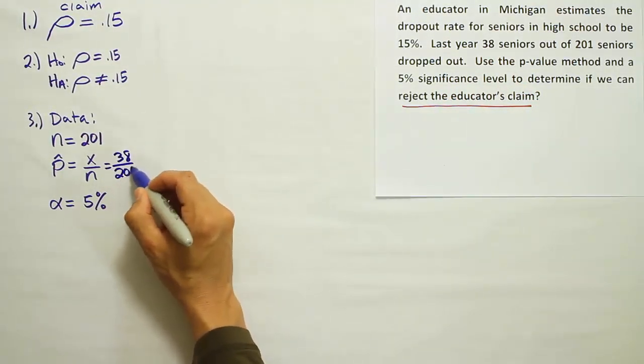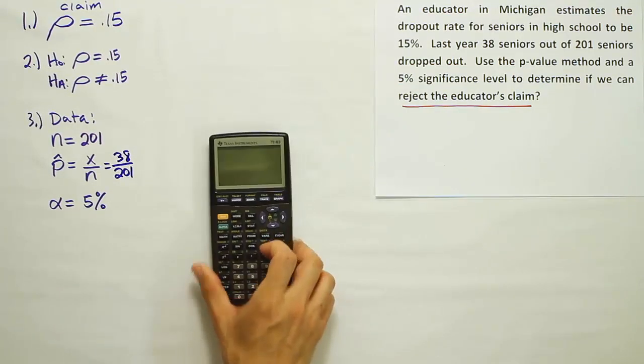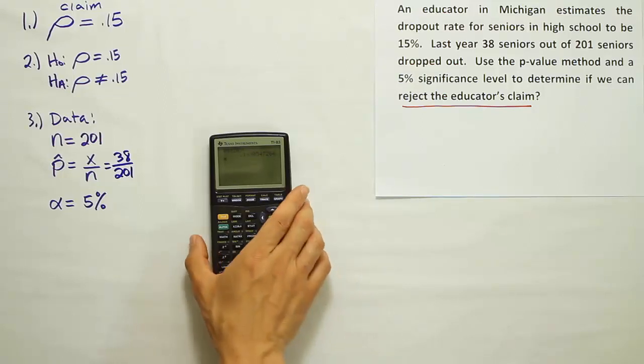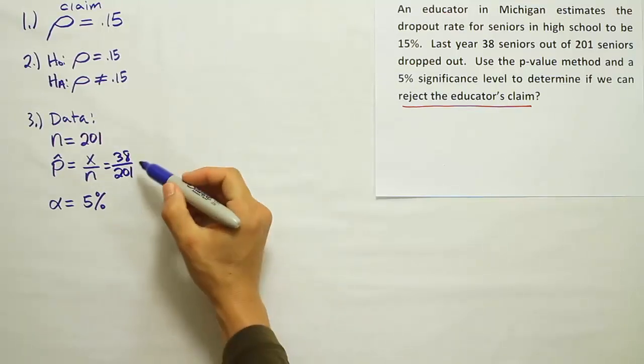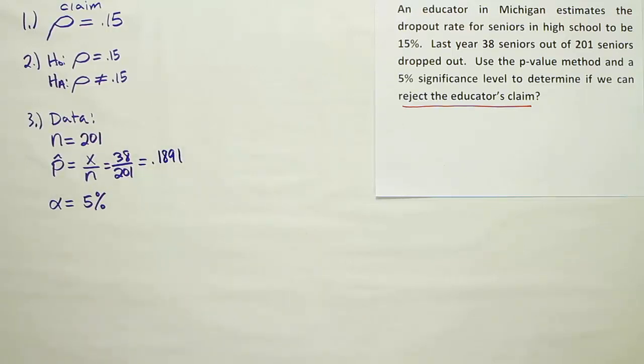And then divide that by the 201, and that gives us our P-hat. Let's work that out and see what we get when we do that. So 38 divided by 201, and we end up with the answer 0.1891. Okay, so that's our P-hat.